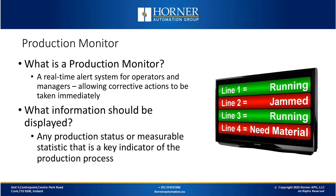So what is a production monitor? In this case a production monitor is a real-time alert system for operators, managers, etc., that allows corrective actions to be taken immediately whenever it's required in a production type environment. You may wonder what information needs to be displayed on one of these production monitors. This depends on what's important for that specific production line — it could be a production status or a statistic or key indicator for that production process that needs to be monitored.